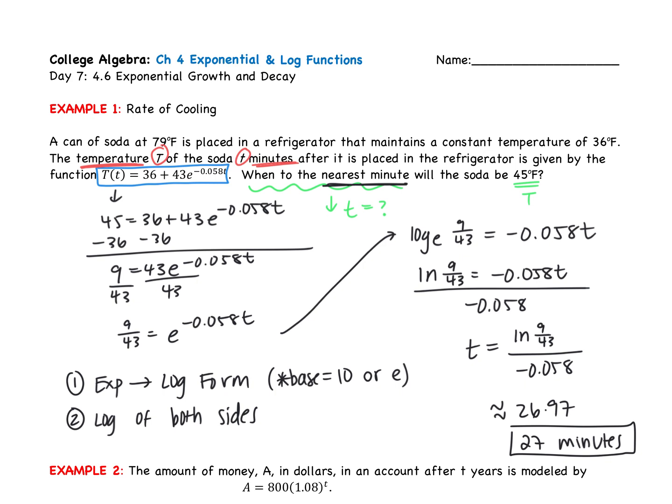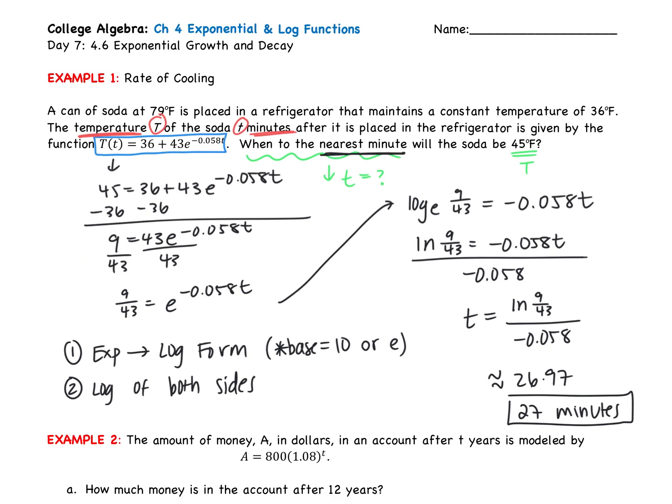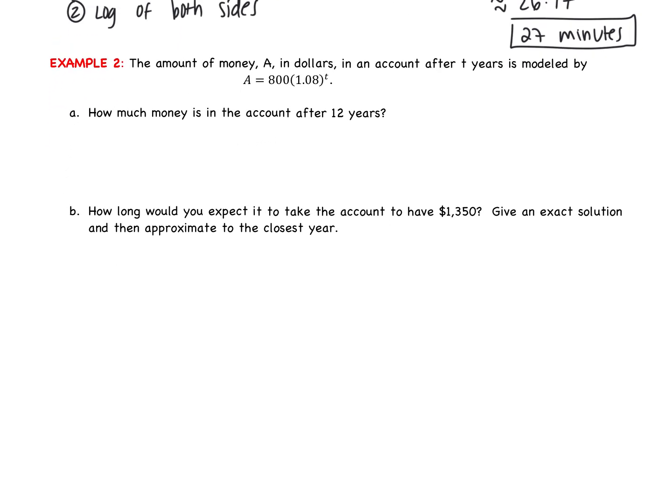Any questions before we try another one? Okay, so let's look at example two then. The amount of money, A, in dollars, in an account after t years is modeled by that equation. How much money is in the account after 12 years? Here's what we should be looking at. We have an equation. So I said that's the first thing that we're going to be given. Second thing, the variables will be defined. So A is the amount of money in dollars in the account. T is the number of years. Part A should tell us what we're looking for. How much money tells us that we're looking for A, which means we know T, which in our case is 12 years.